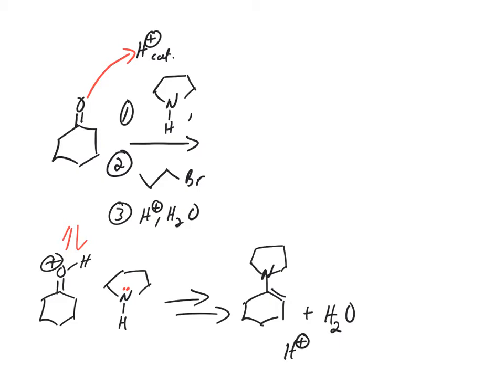Now this enamine is very similar to enolates and enols because this carbon, this alpha carbon, is the nucleophile. That's the nucleophilic spot, not the nitrogen—this position right here.